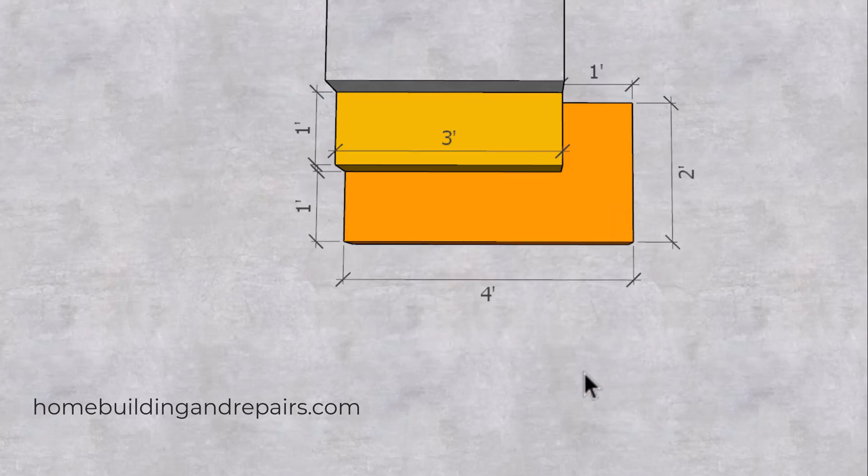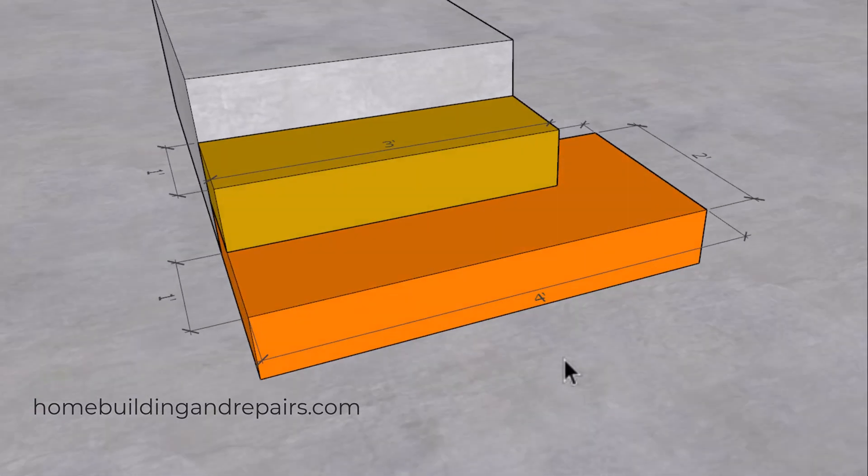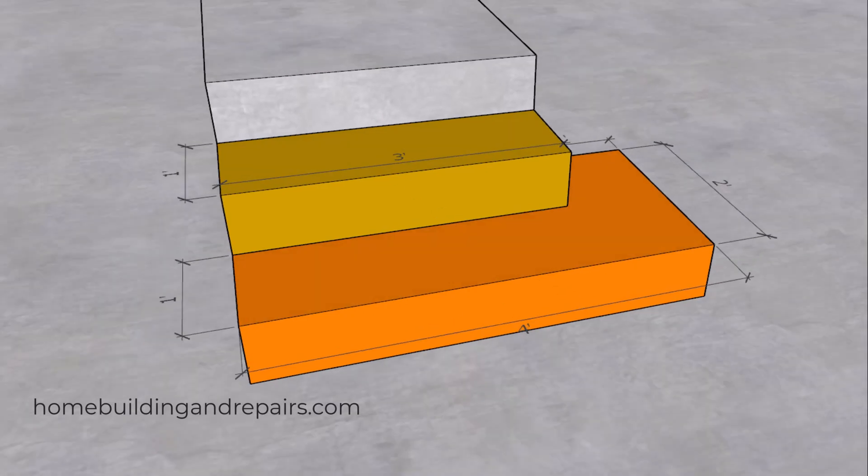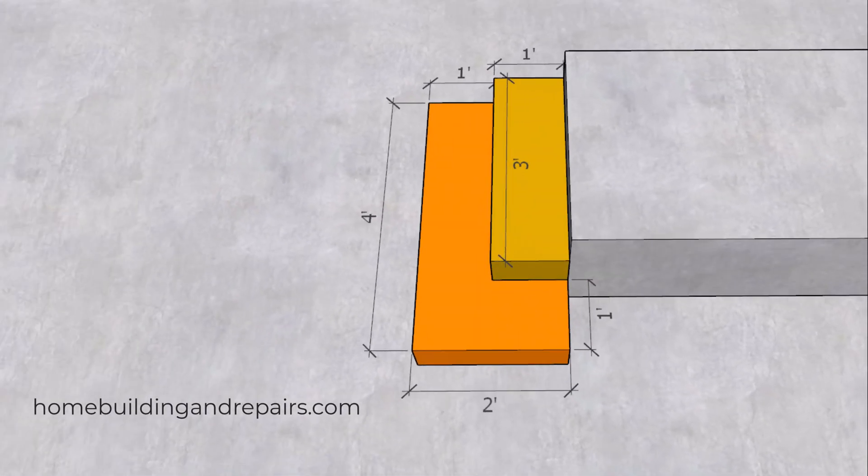And now for the big question: why would a building inspector allow something like this? Because I've even built things like this and seen them built. The simple answer is that some building inspectors interpret the codes differently. So you would need to check with your local building department to see if you could build something like this. And don't be surprised if the building department approves something like this but the building inspector doesn't.